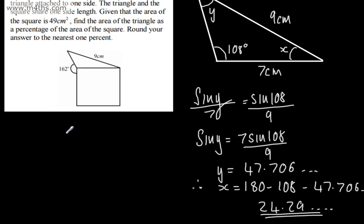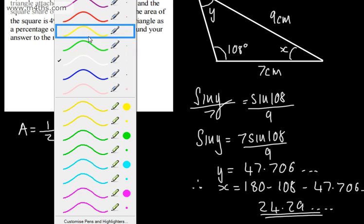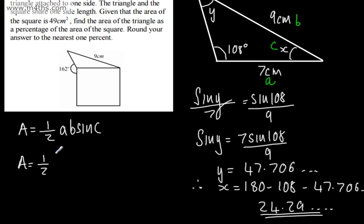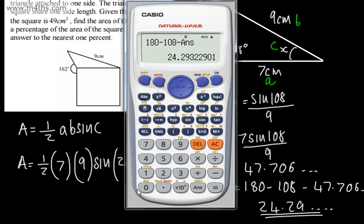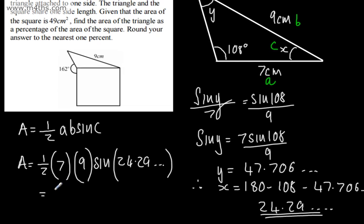I'm now going to use that just here. We can say the area of the triangle is one-half a b sine c, as we've seen in a previous video. This will be a, this will be b, and this will be c. We've got the value of c, that's 24.29°. So the area is one-half multiplied by 7, multiplied by 9, multiplied by sine of 24.29°, and that gives me 12.959cm².